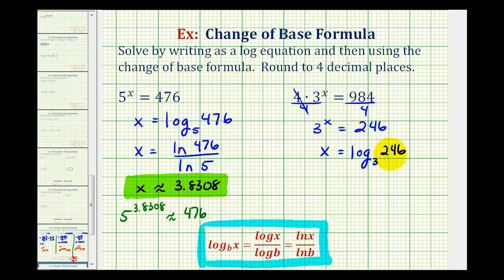Now we'll evaluate this using the change of base formula as the directions tell us. So x is going to be equal to natural log of 246 divided by natural log of 3.